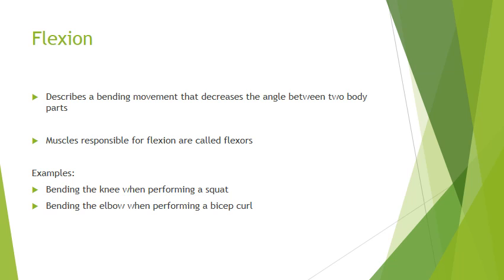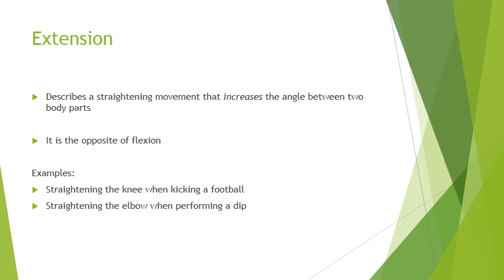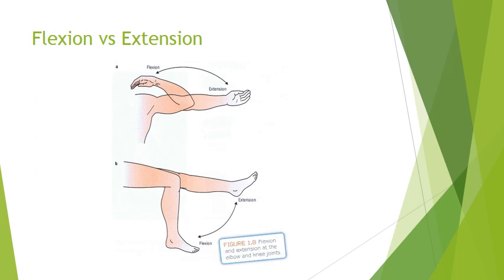Flexion describes a bending movement that decreases the angle between two body parts. Extension describes a straightening movement that increases the angle between body parts. Flexion versus extension.